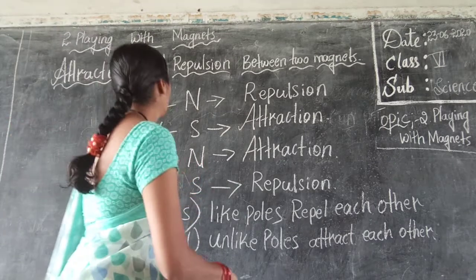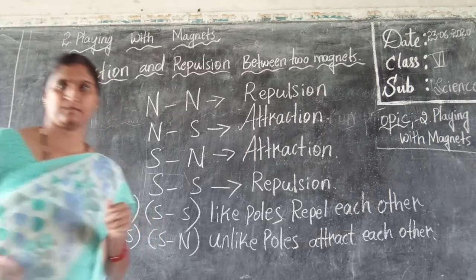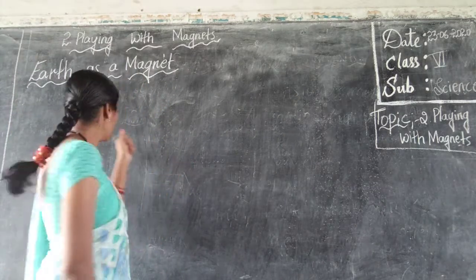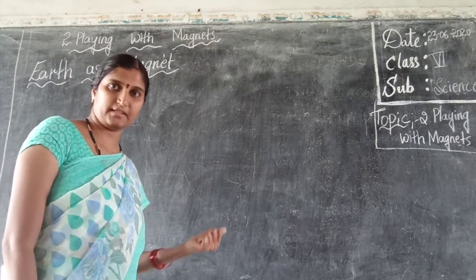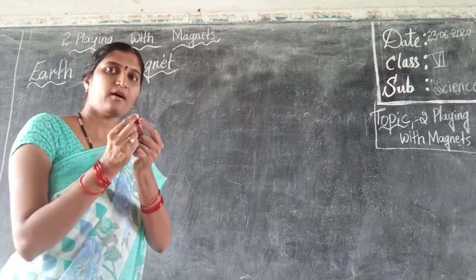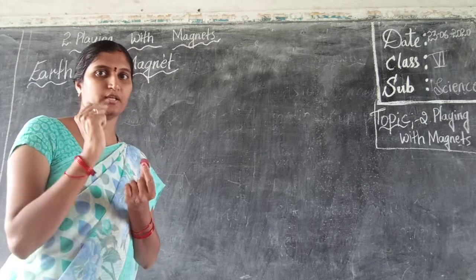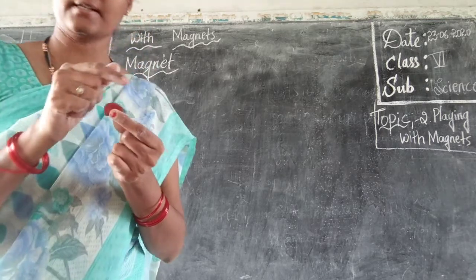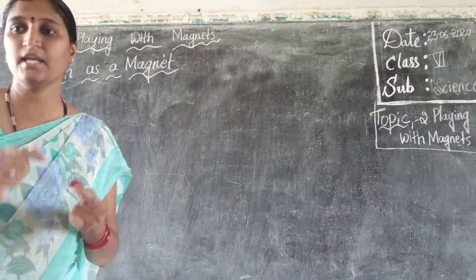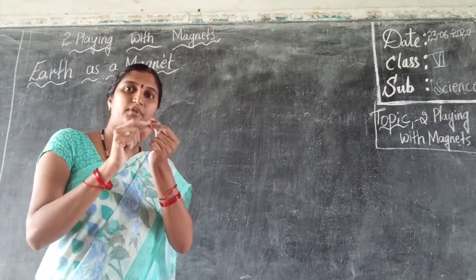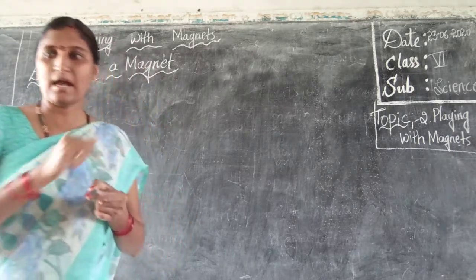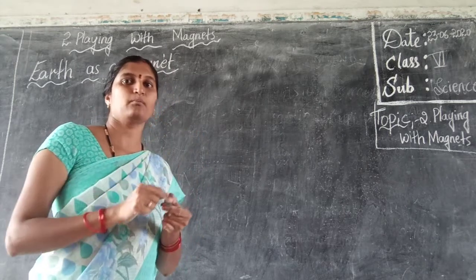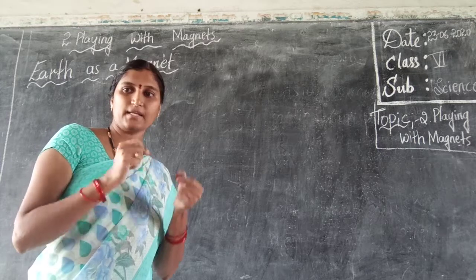In this activity, we learned about attraction and repulsion between two magnets. Now let us learn about the Earth as a magnet. We already learned that a suspended bar magnet always comes to rest in the north and south direction. Why does it come to rest in that particular direction only? What force is acting on this bar magnet? Let us try to find out by performing an activity.